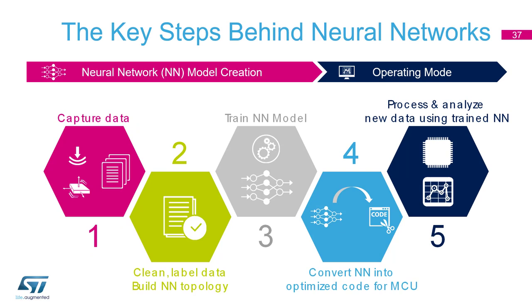These are the five defined steps for implementing neural networks in microcontrollers. The first one is the capture of data. Before that, it's important to think about what you want to do — understanding the target is the most important part. You will have to verify if you reach your goal, and otherwise you will have to change.